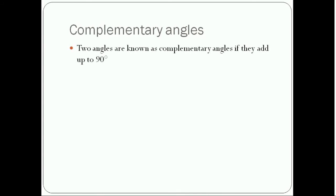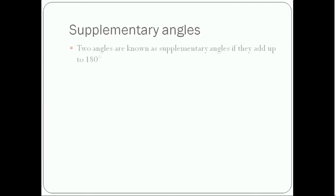Now I will tell you about complementary angles. Two angles are known as complementary angles if they add up to 90 degrees. For example, 50 and 40 — when we add these two angles it will be 90 degrees, so 40 and 50 are complements of each other. Second example: 62 and 28 — when you add 62 and 28 it will be 90, so 62 and 28 are complements of each other.